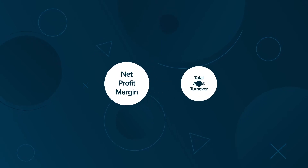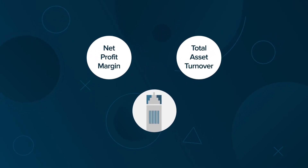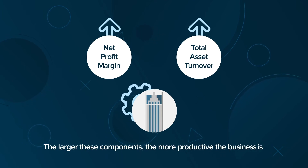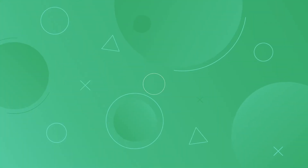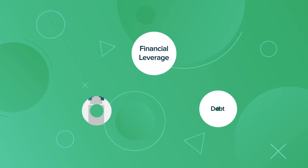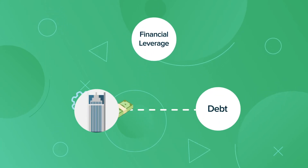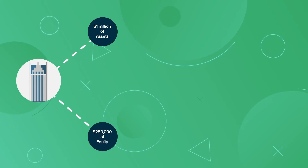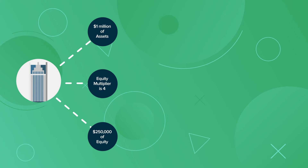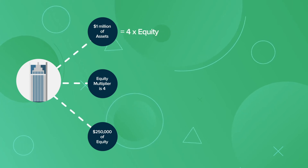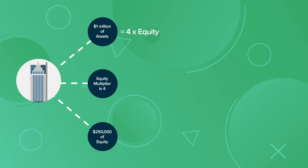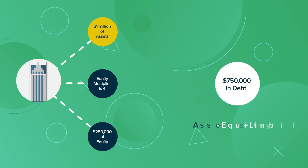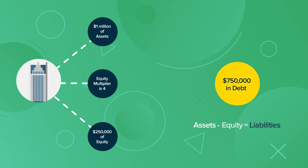Net profit margin and total asset turnover assess the operations of the business. The larger these components, the more productive the business is. The last component, financial leverage, captures the company's use of debt to finance its activities. If a company has $1 million of assets and $250,000 of equity, its equity multiplier is 4 because its assets are 4 times greater than its equity. The balance sheet will show that the company has $750,000 in debt, since assets minus equity equals liabilities.